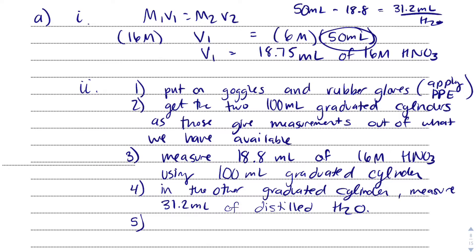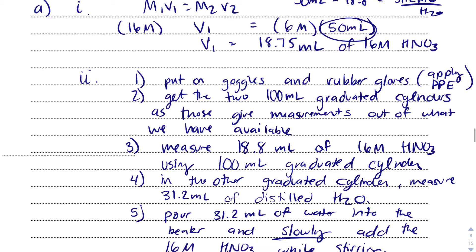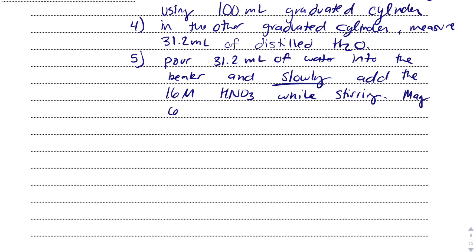Then the saying is, we always add - it says be like an otter, add acid to water. And you do that slowly. Just slowly add acid to water. So we're going to pour the 31.2 milliliters of water into the beaker and slowly add the 16 molar HNO3 while stirring. You may consider even using the dropper, until all acid has been mixed with the water.